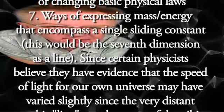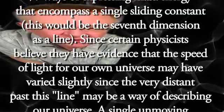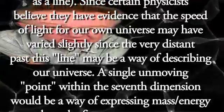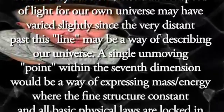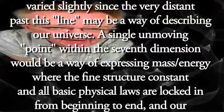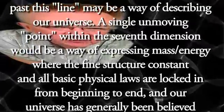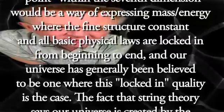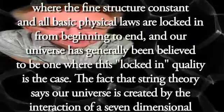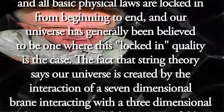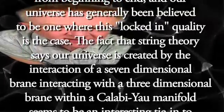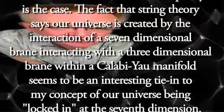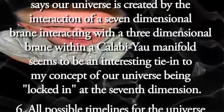Since certain physicists believe that they have evidence that the speed of light for our own universe may have varied slightly since the very distant past, this line may be a way of describing our universe. A single unmoving point within the seventh dimension would be a way of expressing mass-energy where the fine structure constant and all basic physical laws are locked in from the beginning to end, and our universe is generally believed to be one where this locked-in quality is the case. The fact that string theory says our universe is created by the interaction of a seven-dimensional brane interacting with a three-dimensional brane within a Calabi-Yau manifold seems to be an interesting tie-in to my concept of our universe being locked in at the seventh dimension.